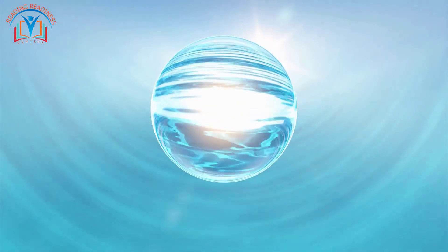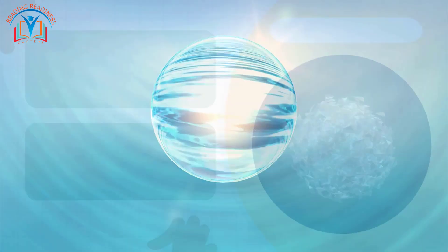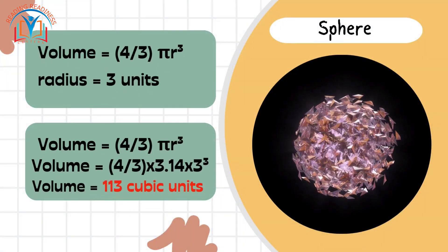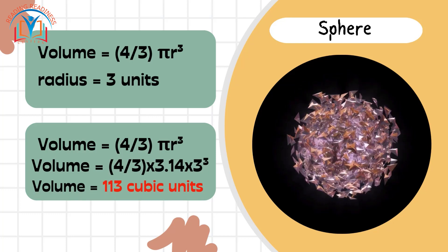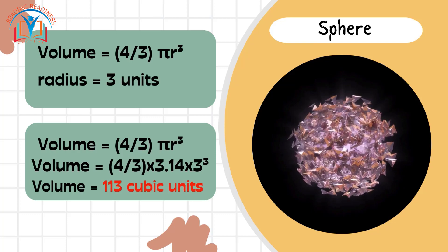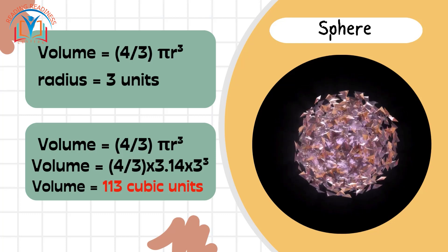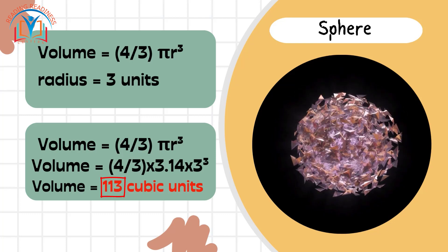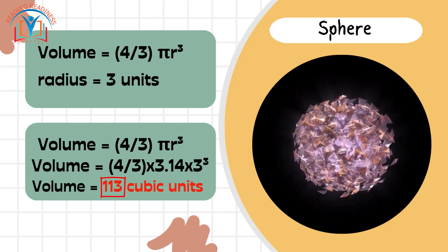Spheres. Consider a sphere with a radius of 3 units. Plug that into our volume formula, and we get 4 thirds times pi times 3 cubed, which equals 36 pi cubic units, or approximately 113 cubic units.